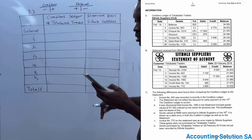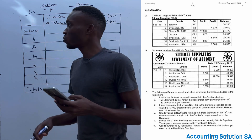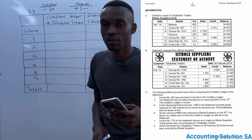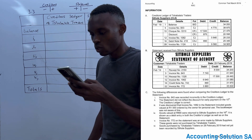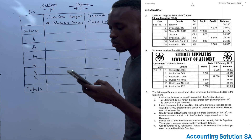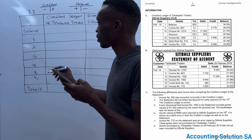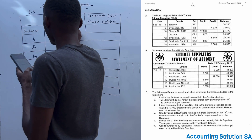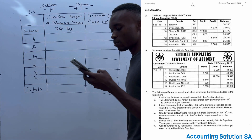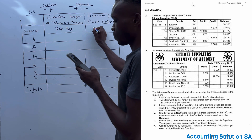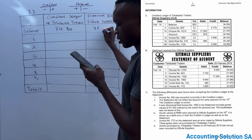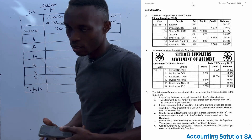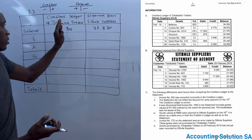We start with the balance. We take the balance from the creditors ledger and the balance from the statement. The last balance on the creditors ledger was R34,905, and on the statement it was R35,808. These amounts are not the same, which means we need to reconcile them.